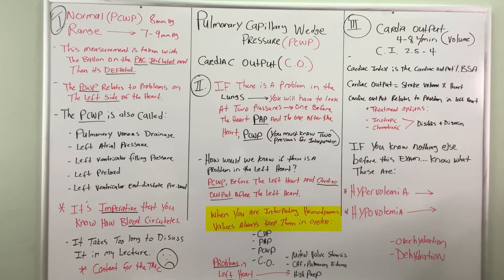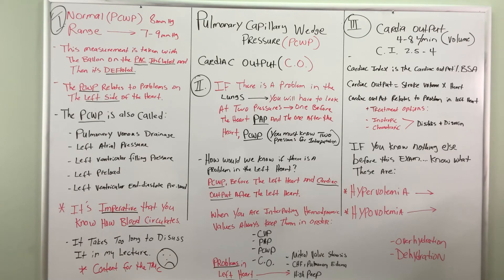When you are interpreting hemodynamic values, always keep them in order. Even though the NBRC won't list them in this order, keep in mind: CVP, PAP, PCWP, and cardiac output. They won't list them in that order on the exam, but you have scratch paper — put them in this order and then start to interpret them, because they will be misplaced on the exam just to throw you off. Problems in the left heart that you should look for include mitral valve stenosis, congestive heart failure, pulmonary edema, and high PEEP from positive pressure ventilation.